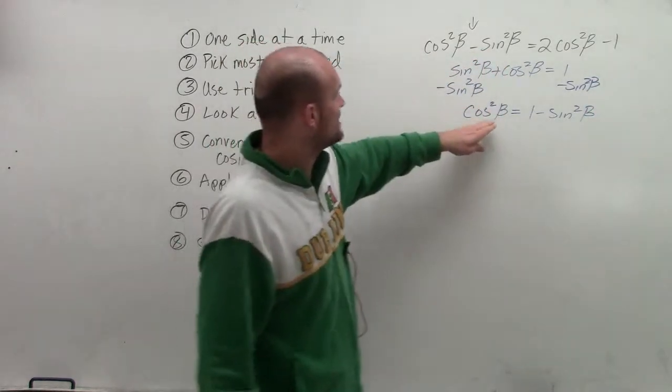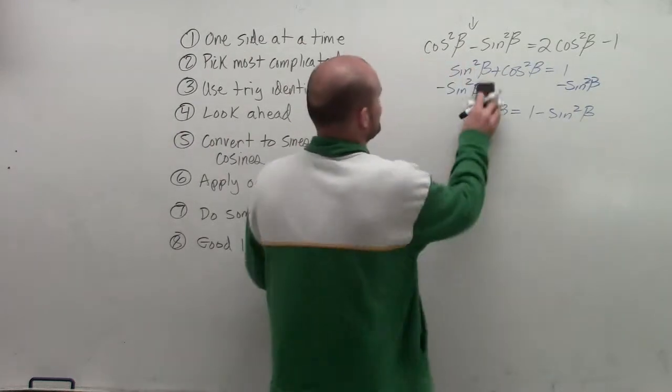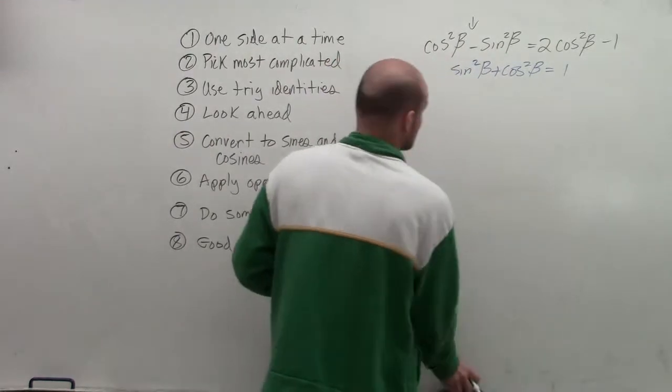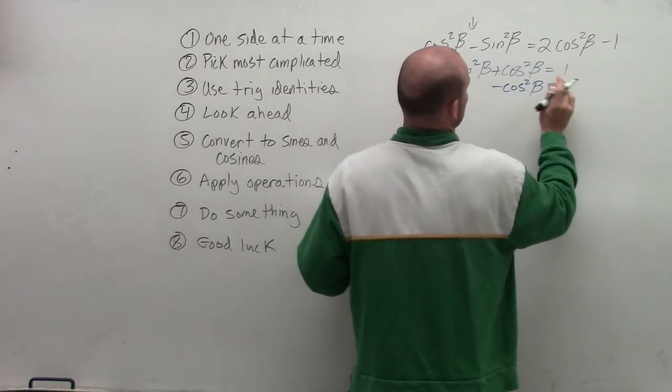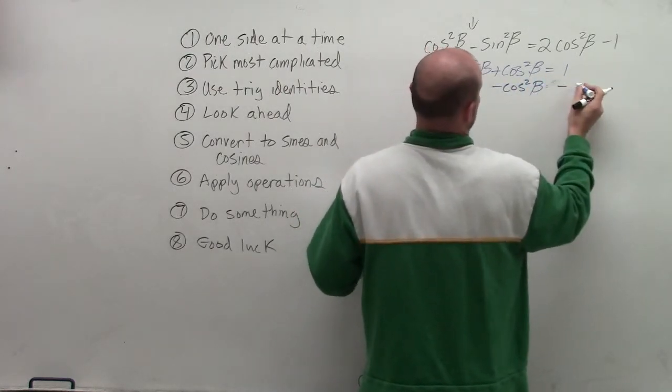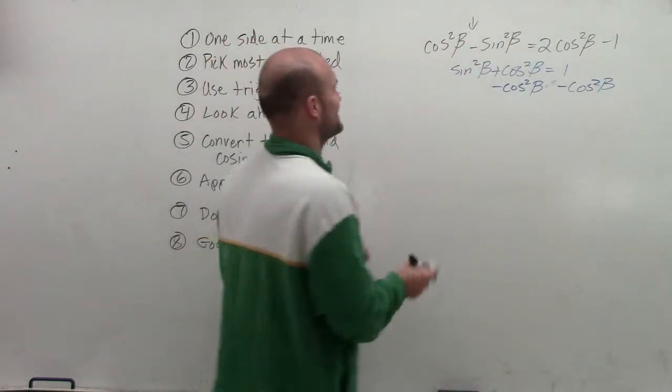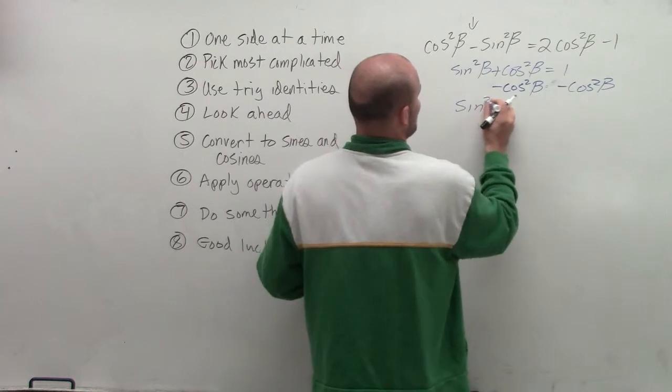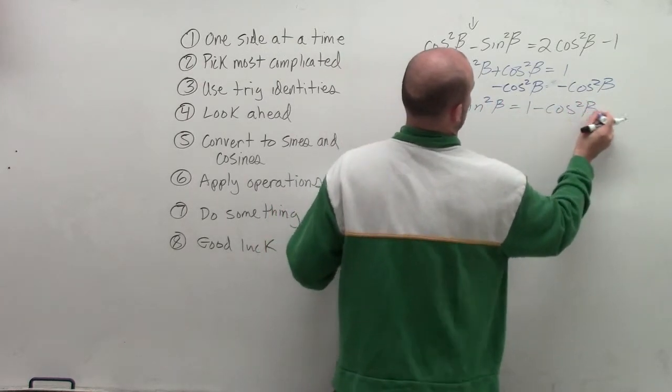So now, what I'm going to do is I am going to, I'm sorry, I don't want to, I've got to solve for sine. So I subtract cosine squared of beta on both sides. I was saying the same thing, but I'm not doing what I wanted to do. So therefore, I can now say sine squared of beta equals 1 minus cosine squared of beta.